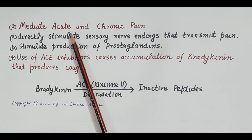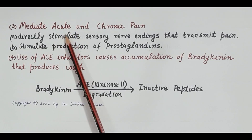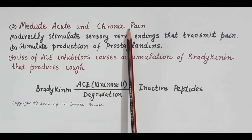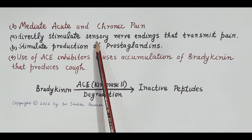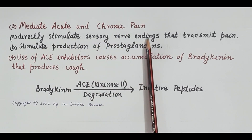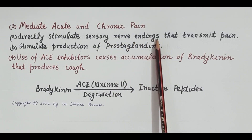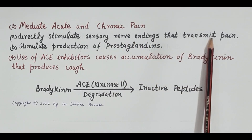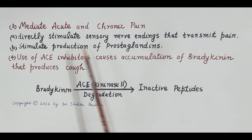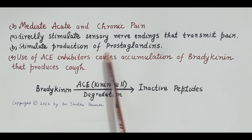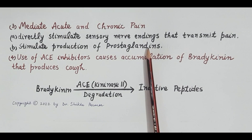Production of large quantities of kinins during inflammation mediates acute as well as chronic pain. Kinins produce pain by two methods: they directly stimulate sensory nerve endings of the skin, and the stimulation of these nerve endings transmits pain. Apart from this, kinins also stimulate production of prostaglandins, which also cause pain.